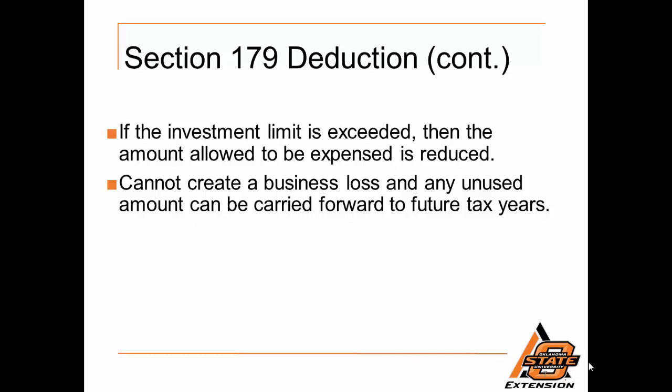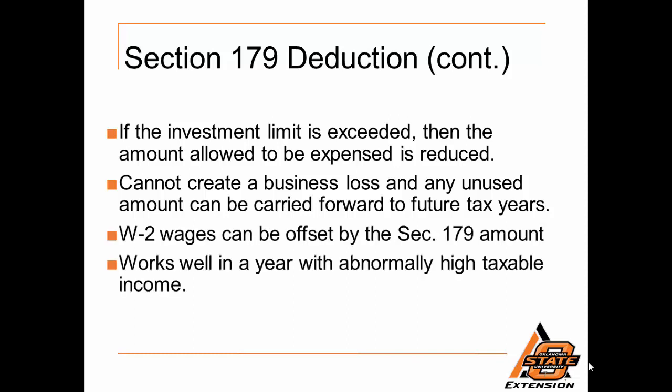If we have $100,000 of net income from the farm, we can write off using Section 179 up to that amount. If we also have W-2 income — non-farm wages — we can increase that amount accordingly. However, it cannot create a business loss in excess of W-2 income and net business income combined. Section 179 works well in abnormally high taxable income years where you can write off a lot of investment very quickly, and also when future income is expected to be lower than this high income year.